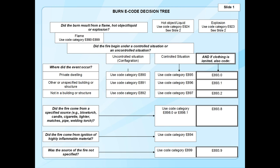Sports-related injuries are also dependent on the sequence of events. E886.0 — fall on the same level in sports due to collision, pushing, or shoving by or with another person — requires that at least two people are involved. The E917 series covers being struck against or by a person or object in sports, with or without a subsequent fall. Now moving to burns: the key question is determining the source of the burn — fire and flames, hot liquids, electricity, or explosive material — as there are different code ranges depending on the cause.